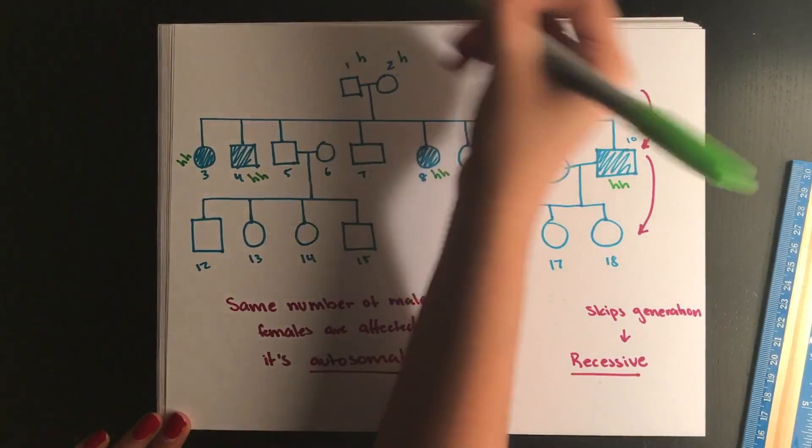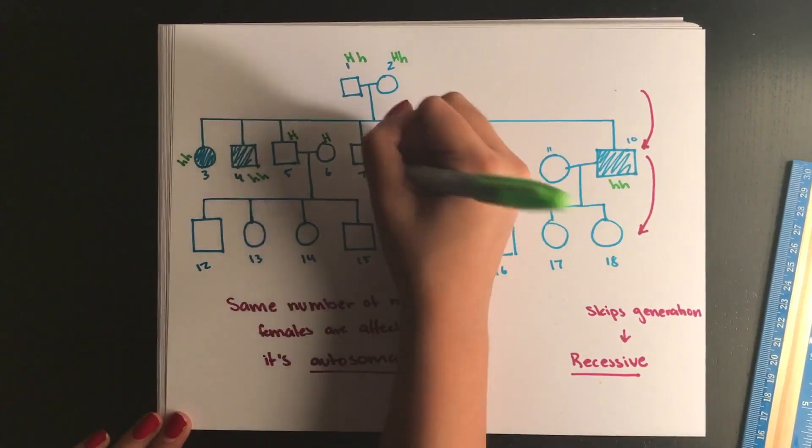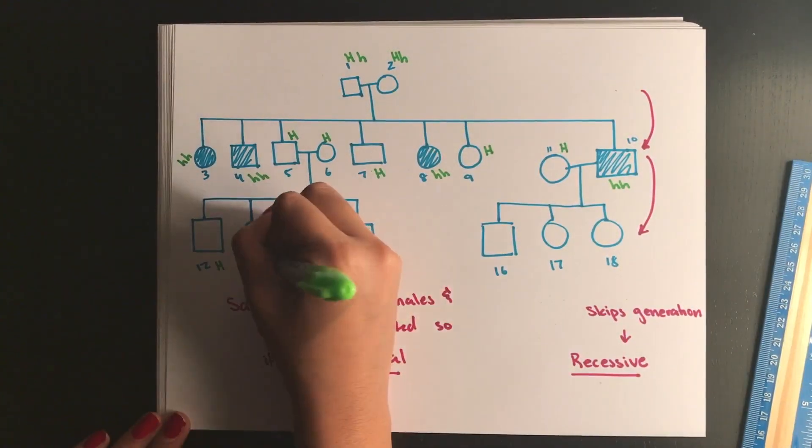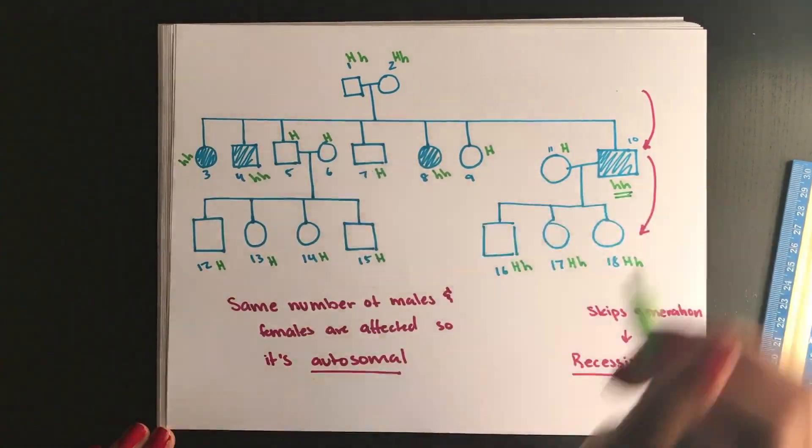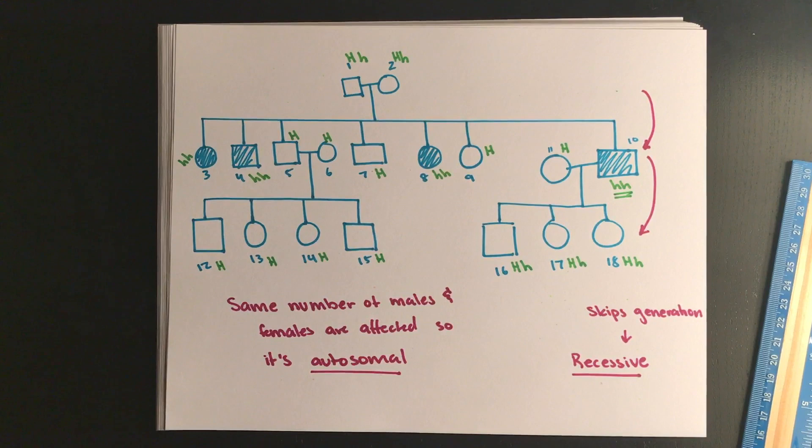Now what I'm going to do is basically fill out all of our knowns, and this is really important for if you get a question that just asks you about the genotype of a specific individual. So we're going to start off with our parents one and two.